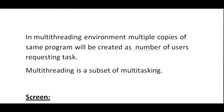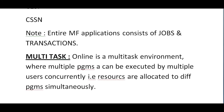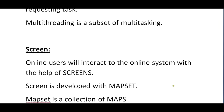In a multi-threading environment, multiple copies of the same program are created equal to the number of users requesting the task. Multi-threading is a subset of multitasking. Online is a multi-task environment where multiple programs can be executed by multiple users concurrently, with resources allocated to different programs simultaneously — that is why multi-threading is a subset of multitasking.